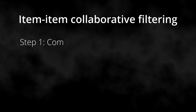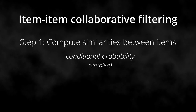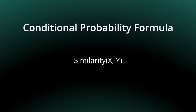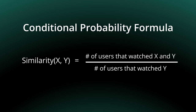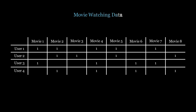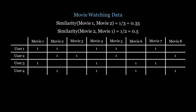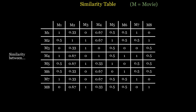Let's start with item-item collaborative filtering. First, I compute how similar movies are to each other. To calculate how similar movie X is to movie Y, I ask: among the users who saw movie Y, what percent also saw movie X on WebFlix? This table has data on which users watched which movies, and using this data I can calculate similarity scores between each pair of movies. For instance, among the three users that watched movie 2, one of them watched movie 1 — so the similarity between movie 1 and movie 2 is 0.33. Notice that the similarity between movie 2 and movie 1 is 0.5, because of the two people who watched movie 1, one of them watched movie 2. Computing the similarity table is step 1 of item-item collaborative filtering.